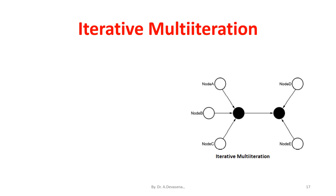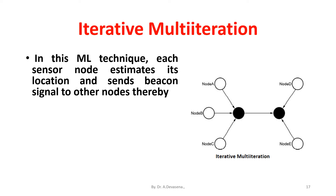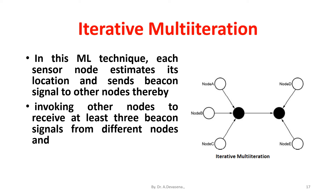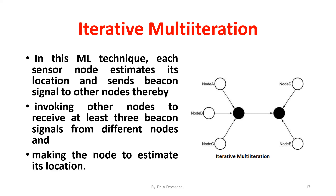In Iterative multilateration, each sensor node estimates its location and sends beacon signals to other nodes, thereby invoking other nodes to receive at least three beacon signals from different nodes and enabling the node to estimate its own location. This is represented in the diagram.